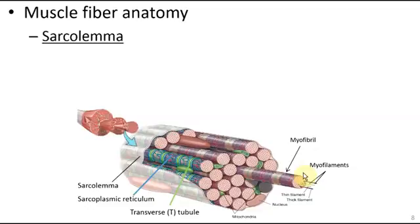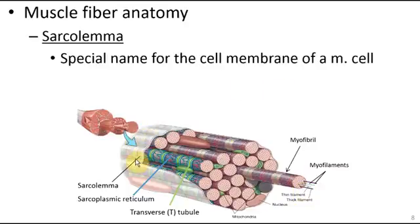Back to the microscopic anatomy. The sarcolemma, which is this surrounding membrane right here, is what we call the cell membrane — also called the plasma membrane. For whatever reason, in muscle cells we don't call it that. Sarco means flesh, which is what muscle is, and lemma means covering.